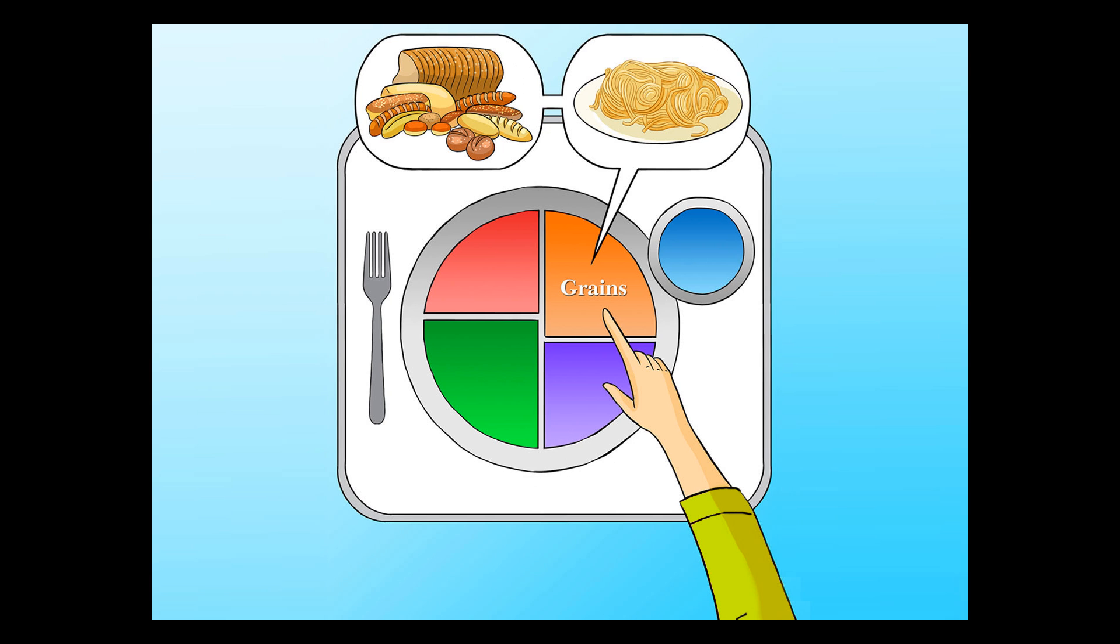Now I point to the orange part of the picture and ask Mommy what that is for. She says that that is for grains. Those are things like bread and pasta. Mommy says that when we buy grains, we should get whole grains. So tonight, we'll have whole wheat buns with our hamburgers.